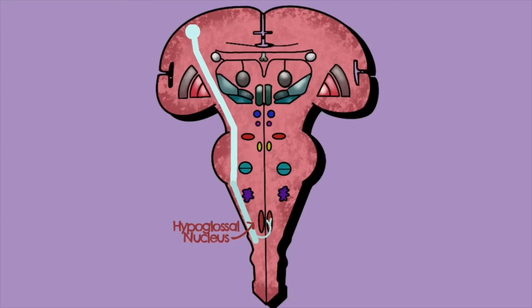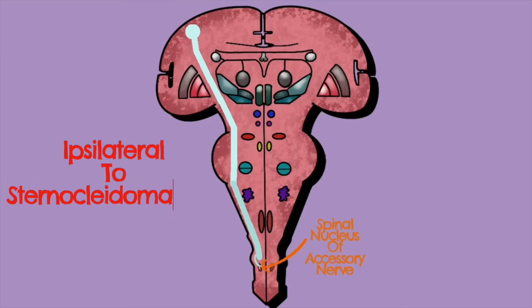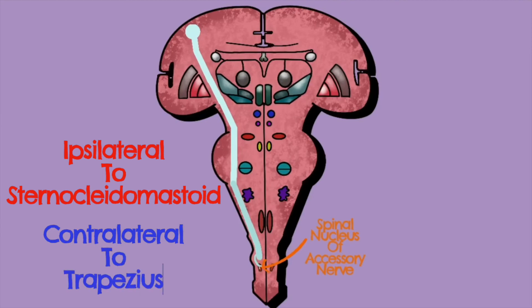Continuing into the spinal cord, we have one further nucleus to consider: the nucleus of the spinal accessory nerve. It is often drawn as an elongated structure because it emerges from several levels. A single ipsilateral innervation from the upper motor neuron is shown, though this requires clarification: there is an ipsilateral innervation to the sternocleidomastoid, responsible for turning the head, but a bilateral innervation to the upper fibers of trapezius. So the pattern depends on which muscle is being considered.